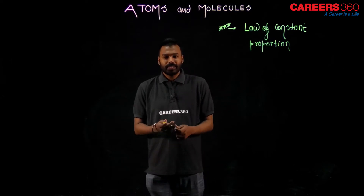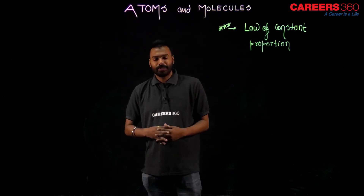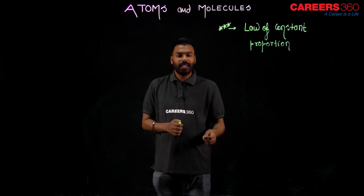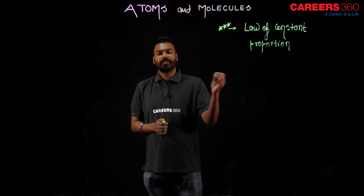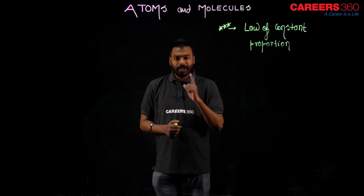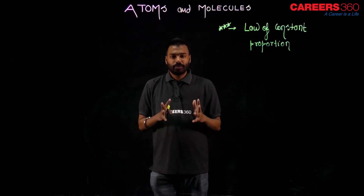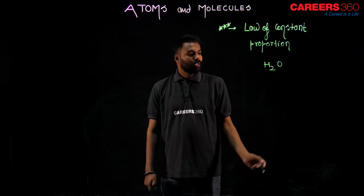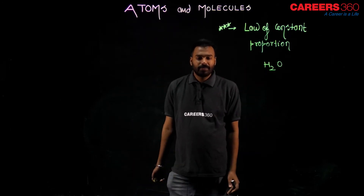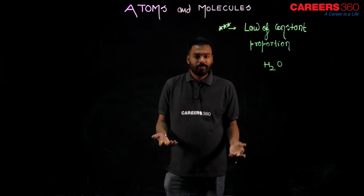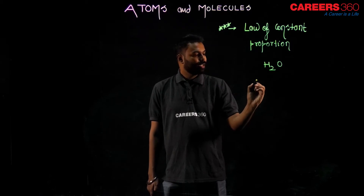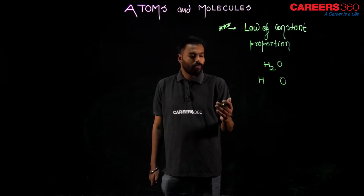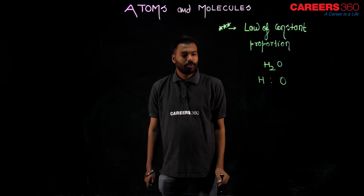What is the law of constant proportion? Understand it roughly first. If you get water from your tap, from your well, from the sea, from a river, or you prepare water in the laboratory — one thing is common everywhere. Water means H₂O, and its constituent particles — the particles from which it is made — are hydrogen and oxygen. The mass ratio of those constituent particles is constant.